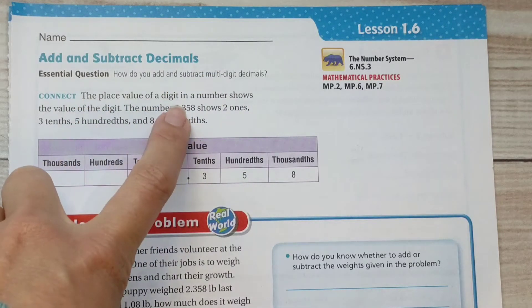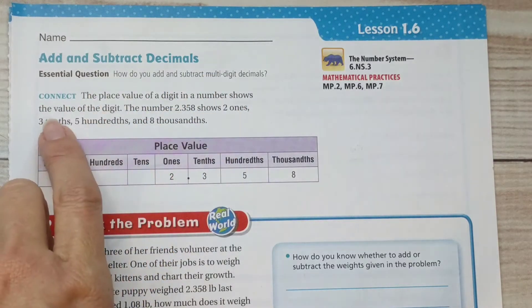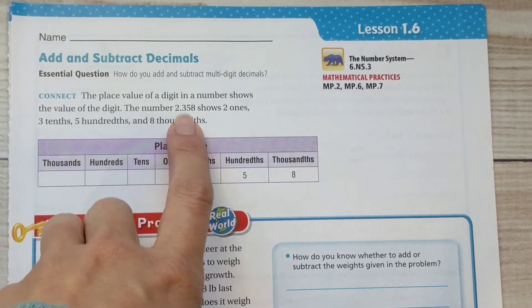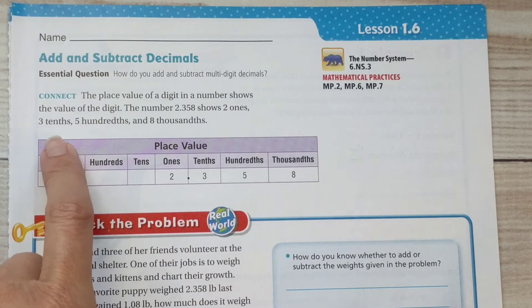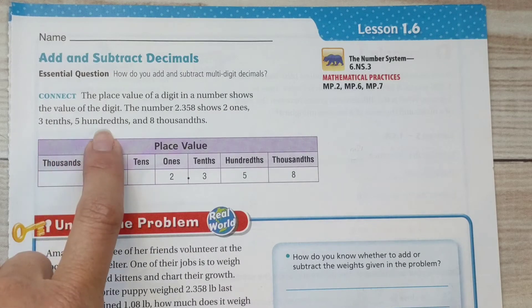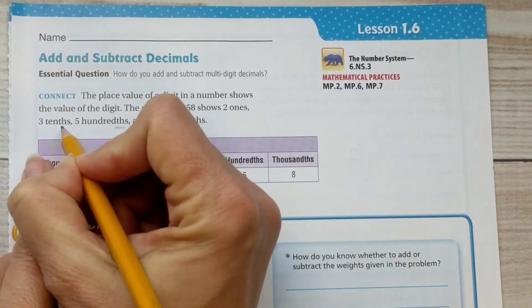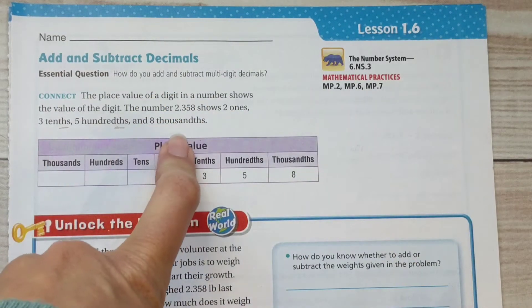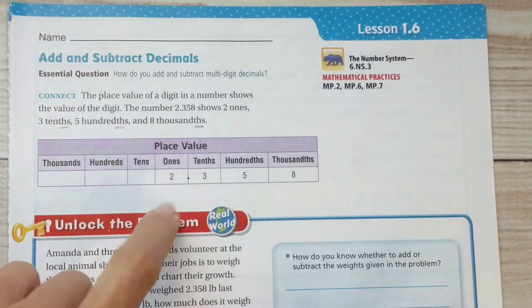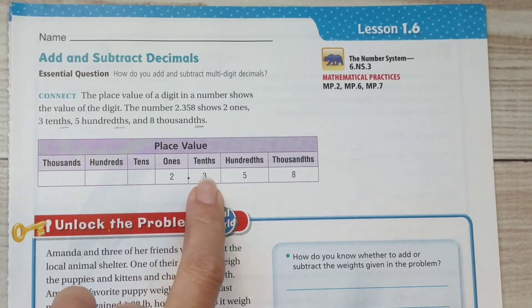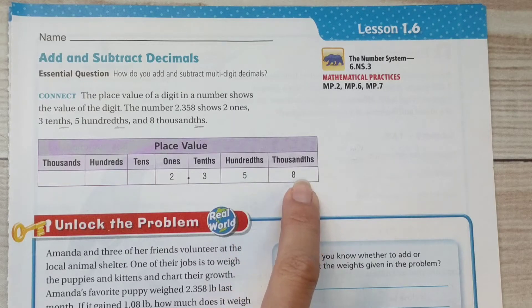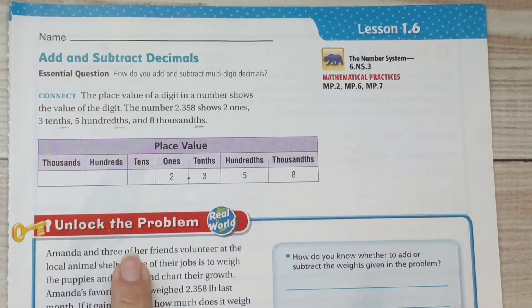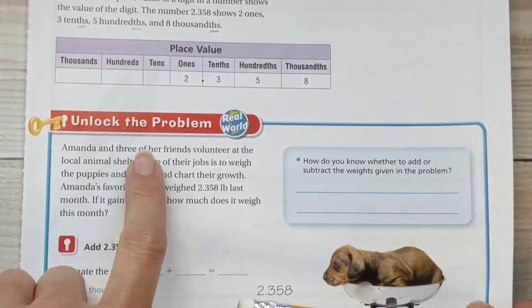Connect. The place value of a digit in a number shows the value of the digit. The number 2.358 shows 2 ones, 3 tenths, 5 hundredths, notice the 'ths' at the end, and 8 thousandths. Just a quick little review on our place value.